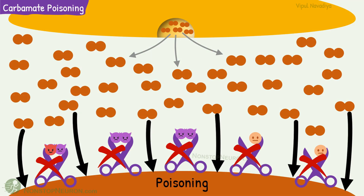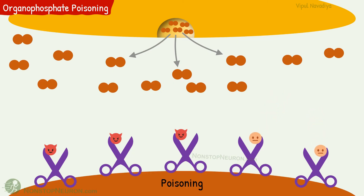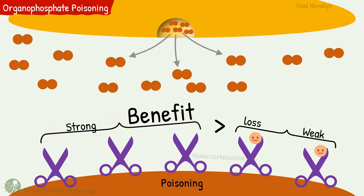That's why pralidoxime is contraindicated in carbamate poisoning. At this point, you might ask: shouldn't the anticholinesterase activity be a problem in organophosphate poisoning also? Well, yes, pralidoxime does show anticholinesterase activity in organophosphate poisoning also. But the inhibition by pralidoxime is weak compared to the strong irreversible inhibition by organophosphate. So the loss due to this weak anticholinesterase activity is insignificant compared to the benefit we get in the form of reactivation of blocked enzymes.